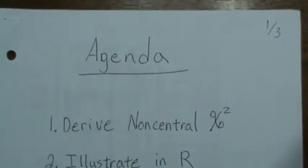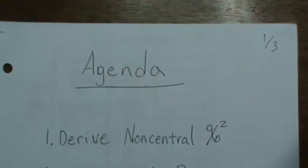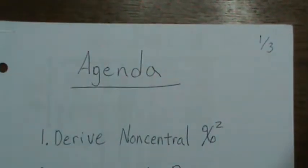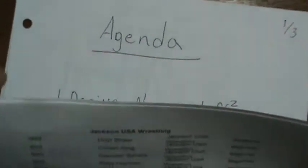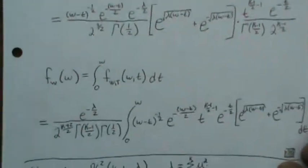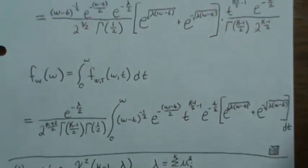This was spurred on by a video I did earlier where I derive the non-central chi-square distribution and I ended up with this result right here.